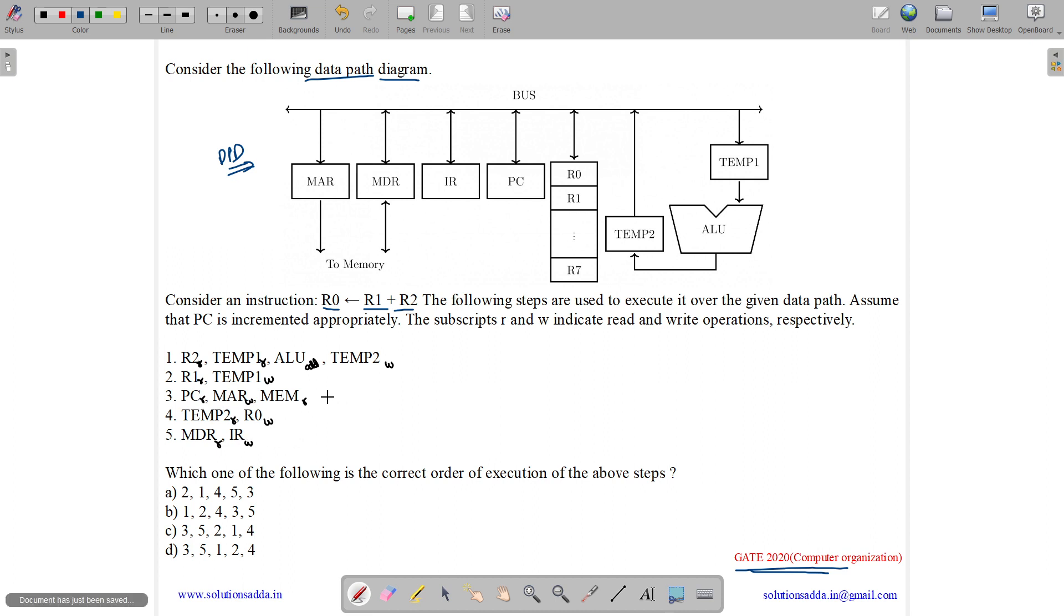So here you can see that this third instruction followed by fifth instruction. Third followed by fifth is basically our instruction fetch cycle. Micro operations can be elaborated as follows. So first what will happen is that we will read the content of program counter and store it in memory address register. Right.